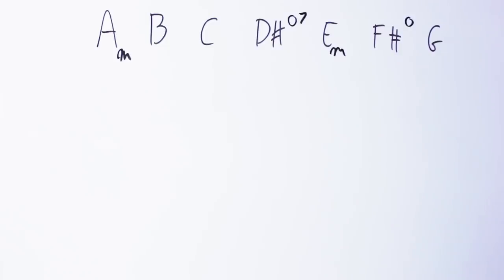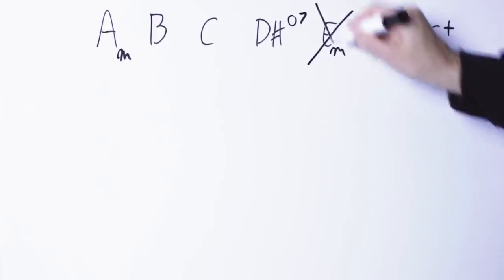And on the G note I can build a G augmented triad, G, B, D sharp. Now the first recommendation here is to not use the E minor chord.